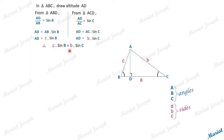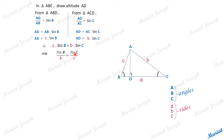Taking this equation further, dividing both sides by b·c, we get sin B / b = sin C / c. This is an equation connecting two angles and two sides of the original triangle — which was not a right triangle, but any triangle.